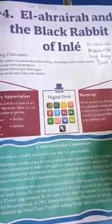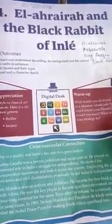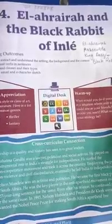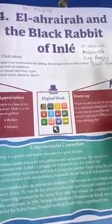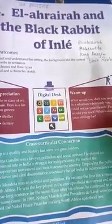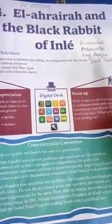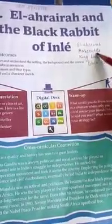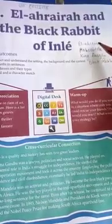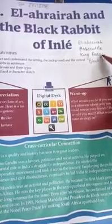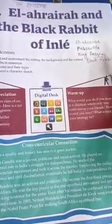Inle is the name of the lake. Now, firstly I want to describe you the characters. The first and main character that you can see on this page is El Arayra. El Arayra is the captain of one of the rabbits group. And the next character is Rabscuttle. Rabscuttle is a very close friend of El Arayra. King Darzen is the leader of another group of rabbits.